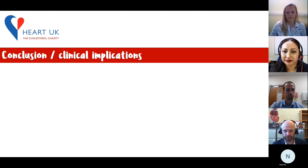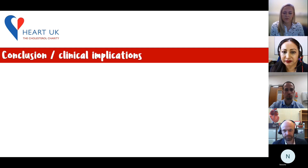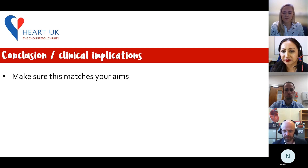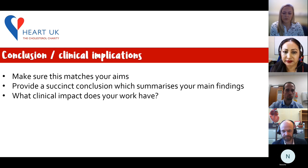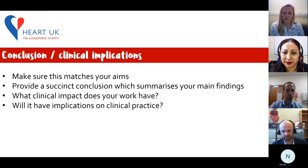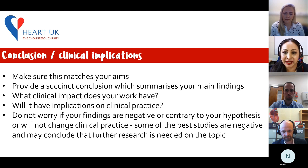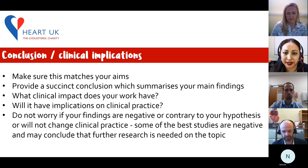The next section is the conclusion and clinical implications. It's really important to make sure the conclusion you state matches the aim of what you set out to do and also matches the title of your abstract. Provide a succinct conclusion which summarises your main findings and think about the clinical impact of your work and whether it will have implications on clinical practice. Do not worry if your findings are negative or contrary to your original hypothesis — some of the best studies are negative and may conclude that further research is needed.